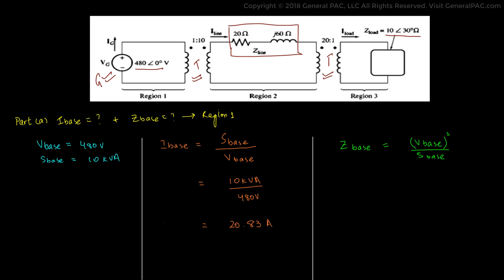The base impedance is equal to the base voltage squared divided by the power base. V base squared divided by S base is equal to 480 volts squared divided by 10 kVA and that gives us 23.04 ohms. So our answers are that the current base is equal to 20.83 amps and the impedance base is equal to 23.04 ohms.